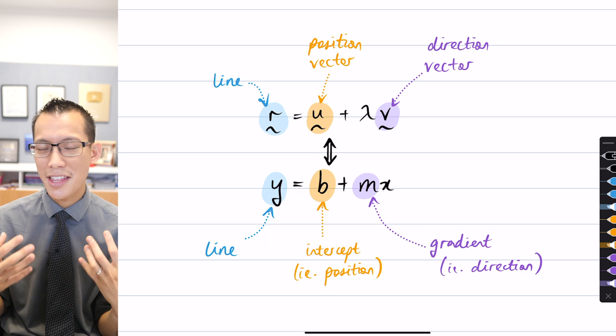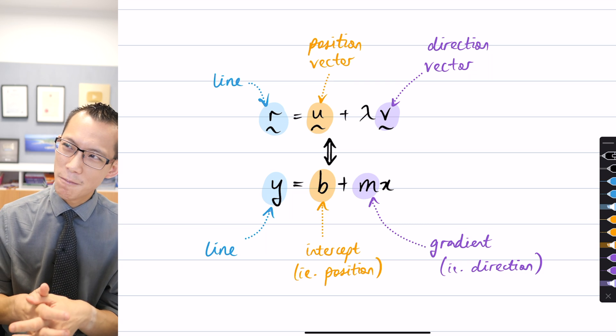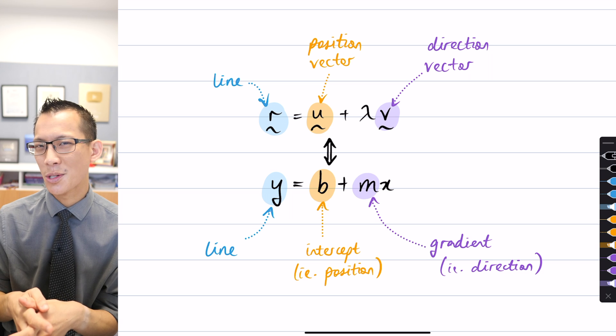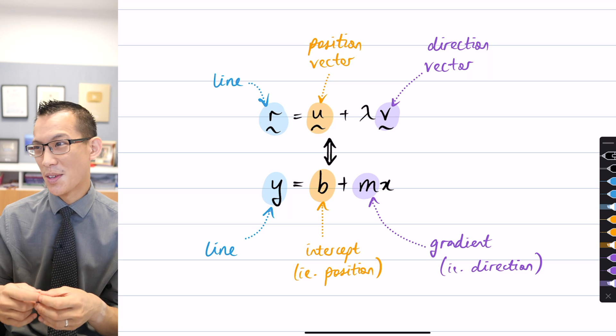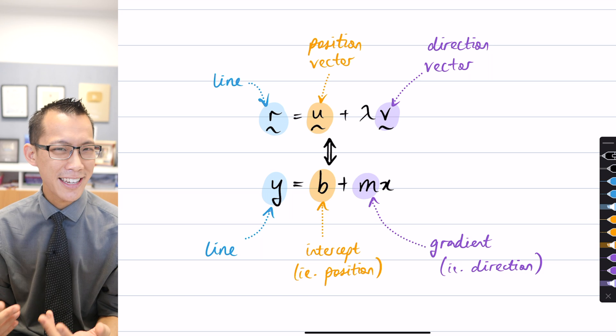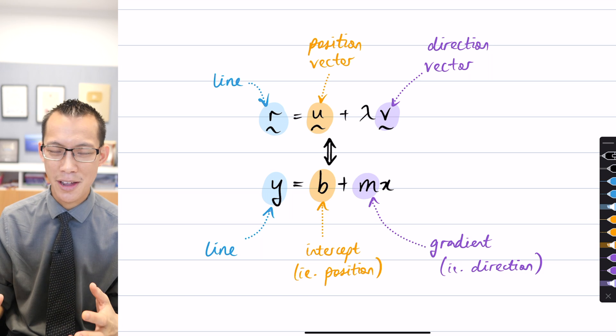We started with the Cartesian equation of a line and thought we could extend it from two dimensions into three dimensions, but we found it didn't quite work the way we hoped. It gave us a plane instead of a line.